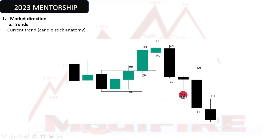With a higher high, we need to have a pullback. This is our pullback, then we have a higher low going back to a higher high, then another higher low, and then a higher high. With this knowledge, before going to the lower time frame, you already know that you have an uptrend.